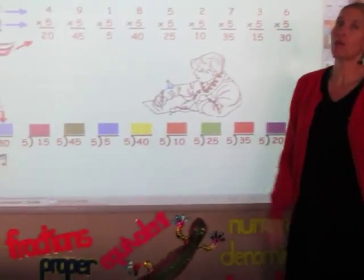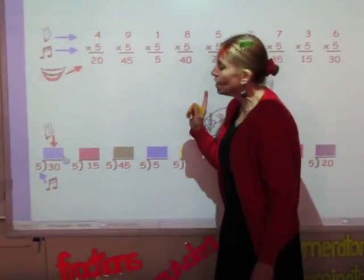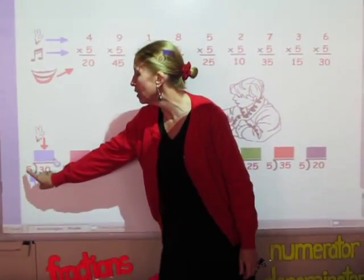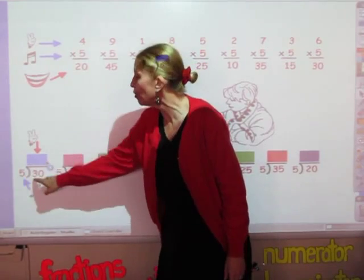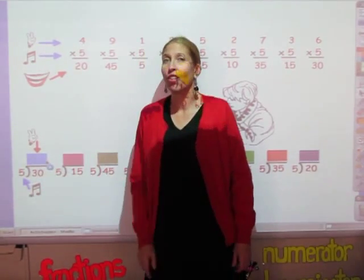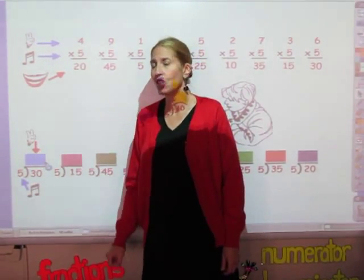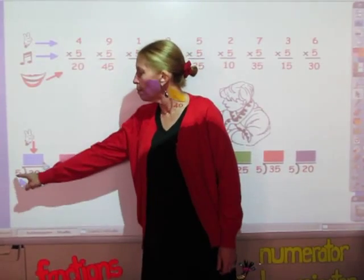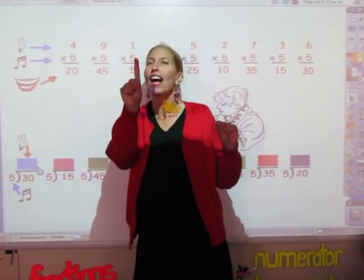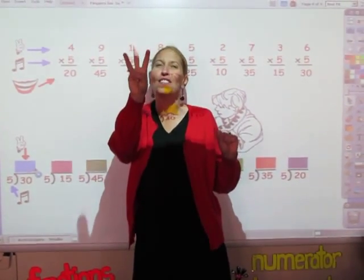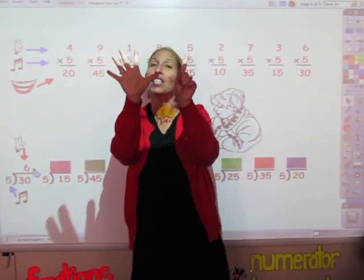On the bottom row are the division facts with the fives. With division, you say the number that's here — the divisor — until you get to the number of the dividend, and the number of fingers is your answer. So I'm going to say my fives until I get to 30: 5, 10, 15, 20, 25, 30. I have six fingers — six is my answer.